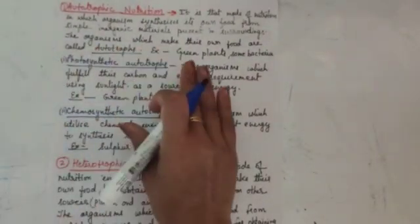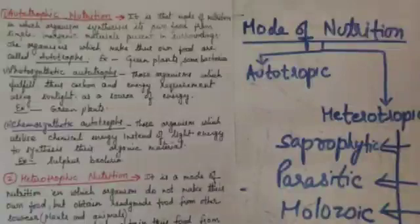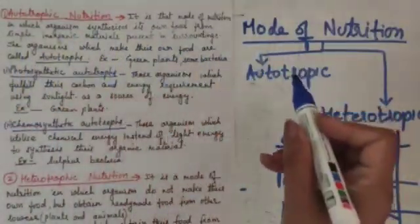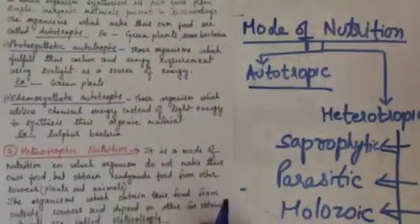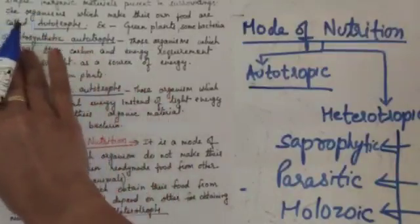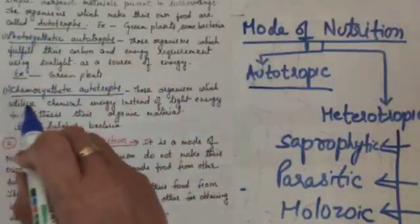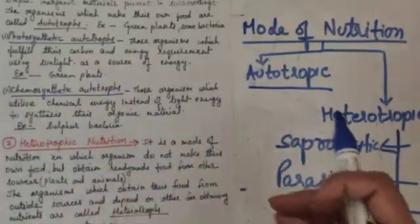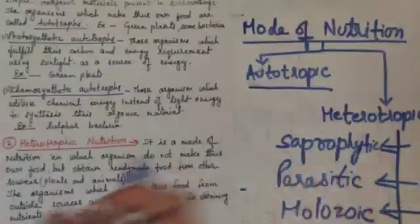Autotrophic mode of nutrition is a mode in which an organism synthesizes its own food from simple inorganic materials present in the surroundings. Organisms that perform this are called autotrophs. Autotrophs can be of two types: photosynthetic autotrophs, which fulfill their carbon and energy requirements using sunlight — for example, green plants — and chemosynthetic autotrophs, which utilize chemical energy instead of light energy to synthesize organic material. An example of chemosynthetic autotrophs is sulfur bacteria.